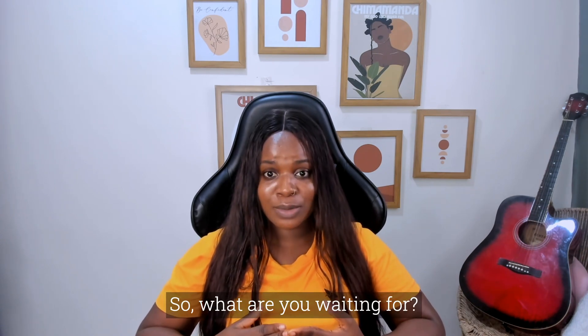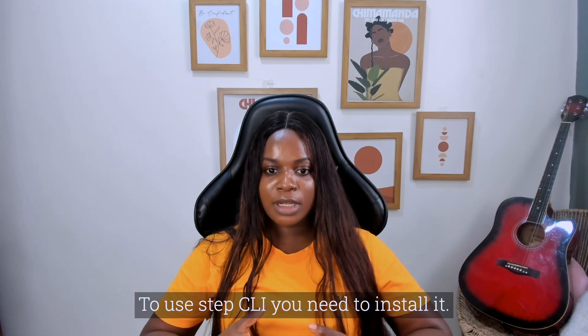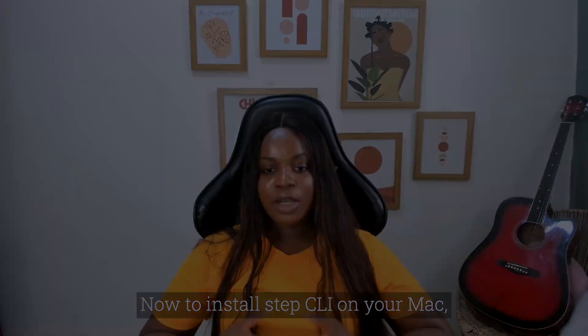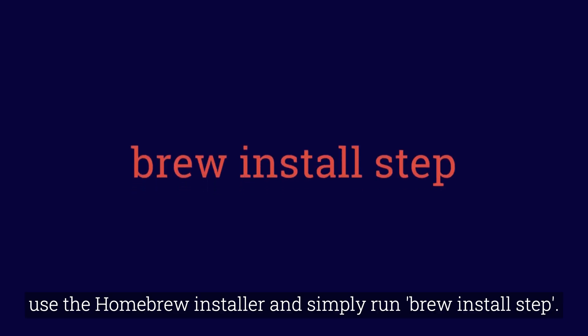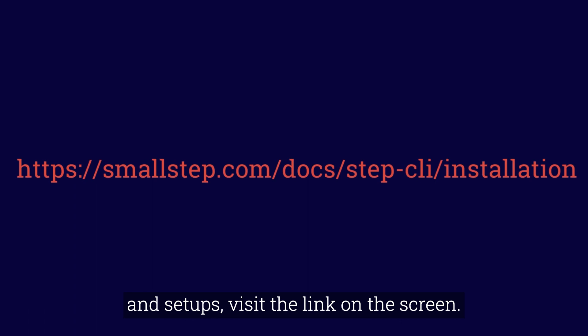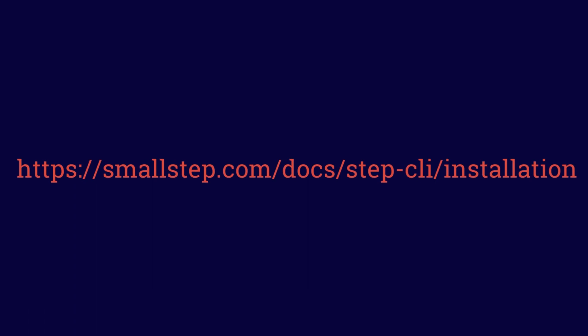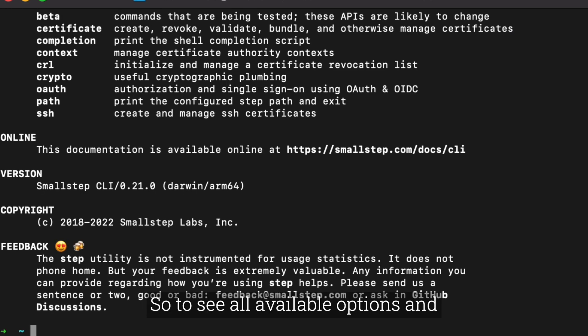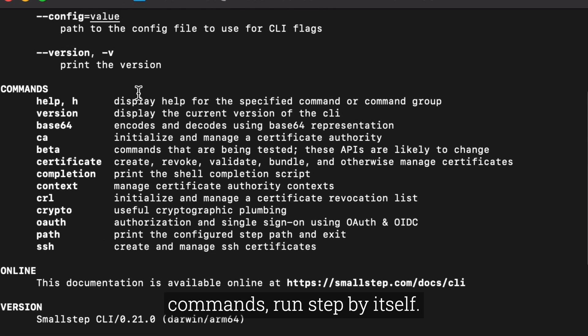So what are you waiting for? To use Step CLI, you need to install it. To install Step CLI on the Mac, use the Homebrew installer and simply run brew install step. For installation commands for other operating systems and setups, visit the link on the screen. You should know Step CLI ships with built-in help, so to see all available options and commands, run step by itself.